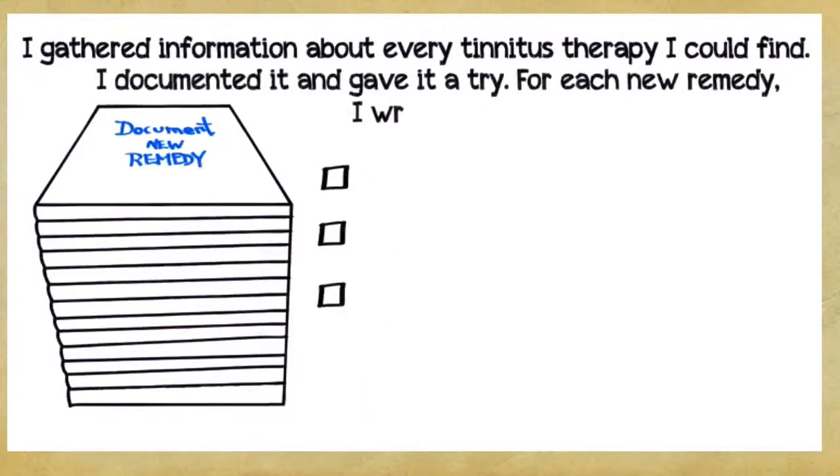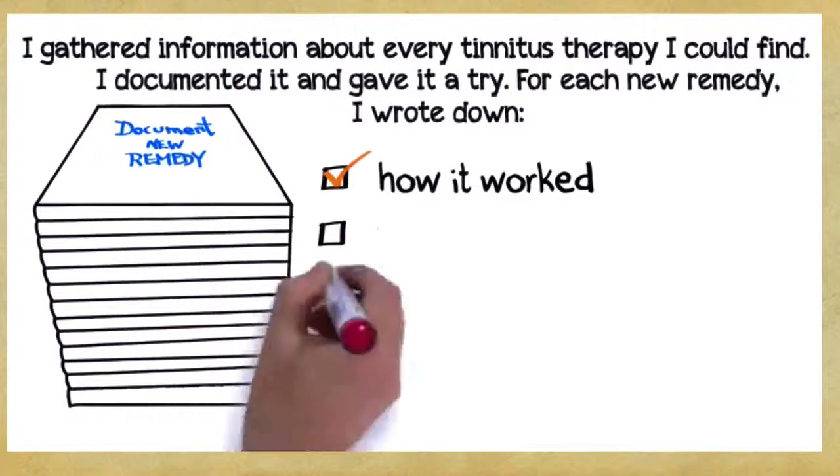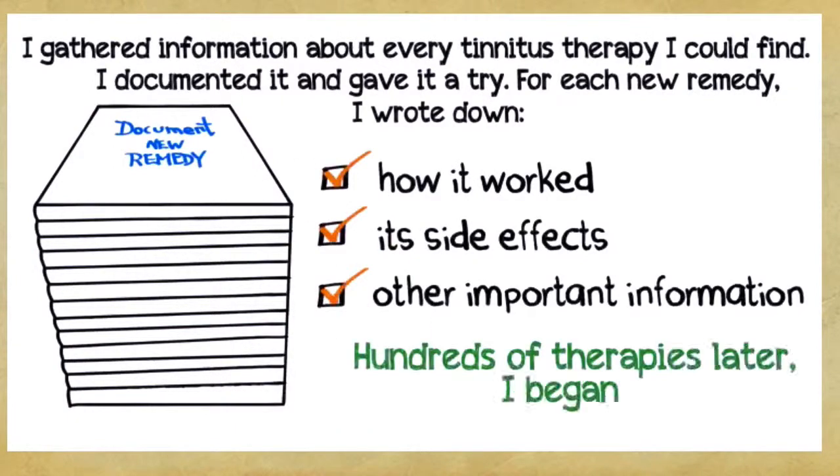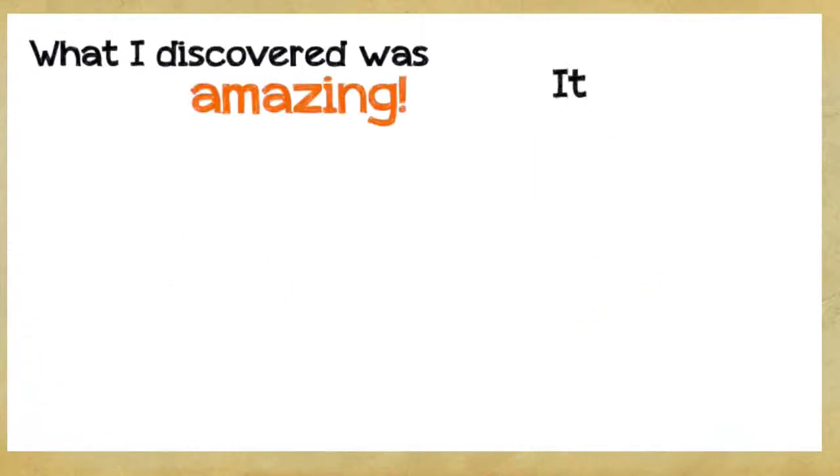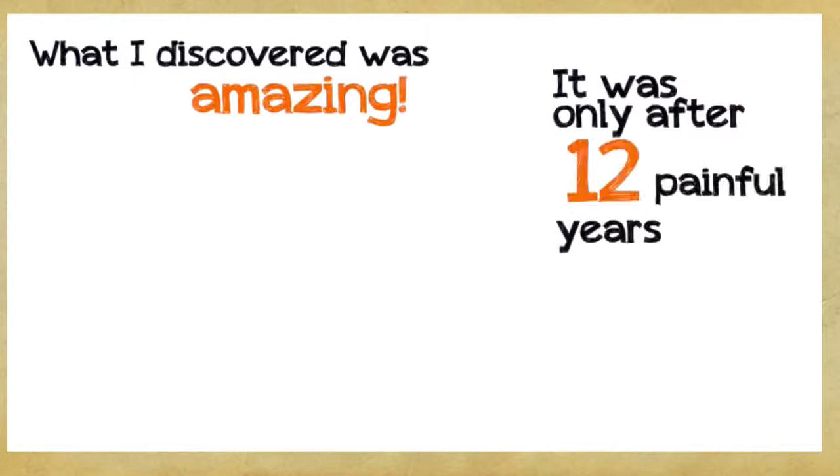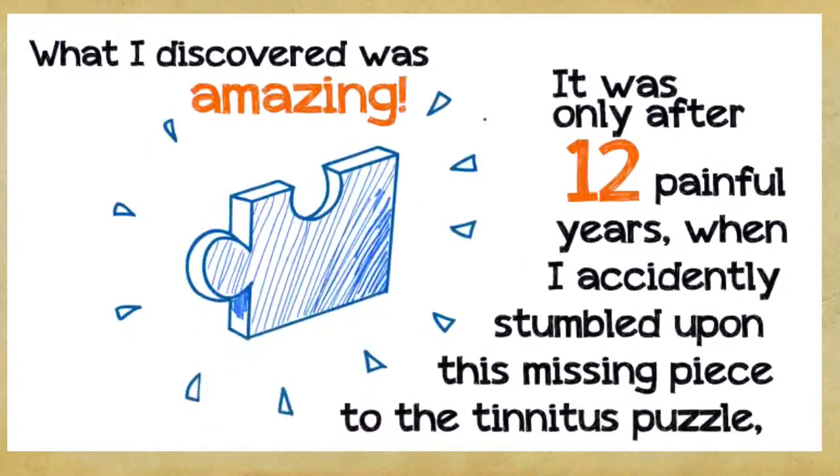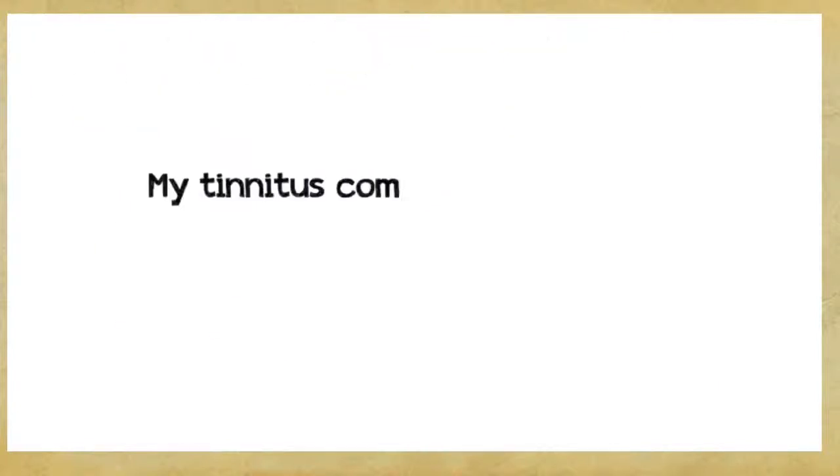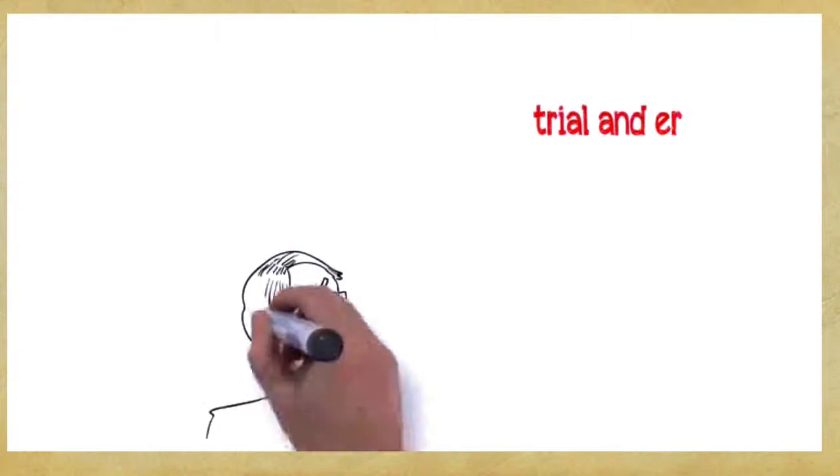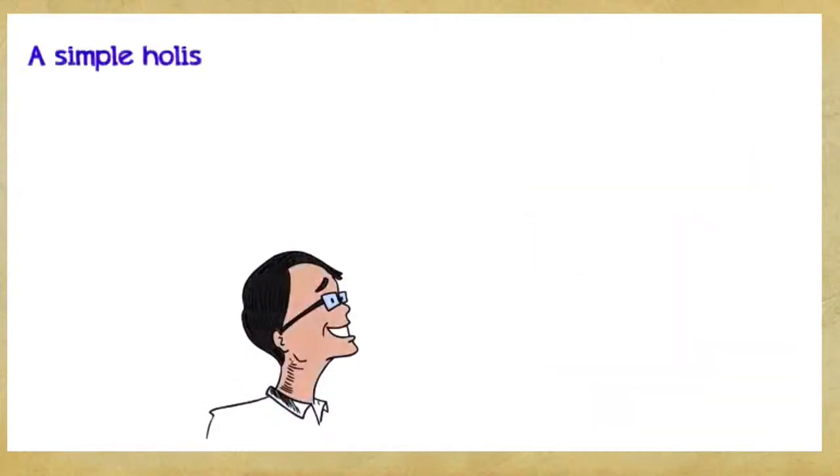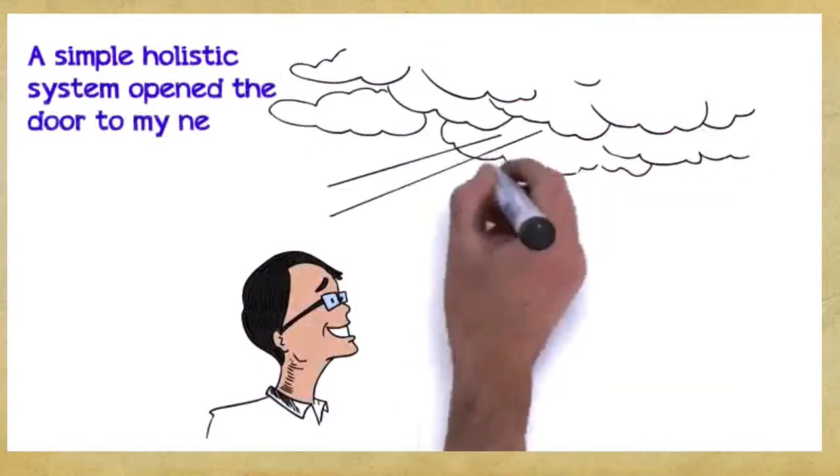For each new remedy, I wrote down how it worked, its side effects, and other important information. Hundreds of therapies later, I began to look for a possible pattern. What I discovered was amazing. It was only after 12 painful years when I accidentally stumbled upon the missing piece to the tinnitus puzzle that my tinnitus completely disappeared. After countless rounds of trial and error, useless treatments, disappointments, and agony, a simple holistic system opened the door to my new tinnitus-free life. My tinnitus and related symptoms such as minor hearing loss completely diminished. After years of suffering, I was finally free from tinnitus.